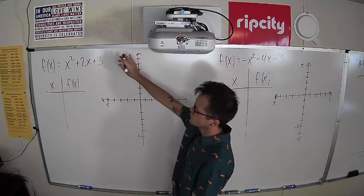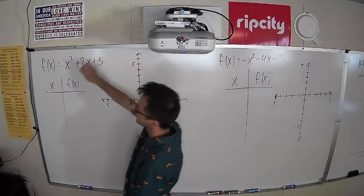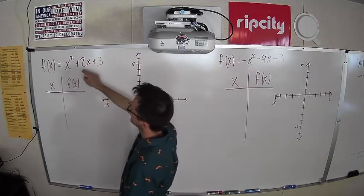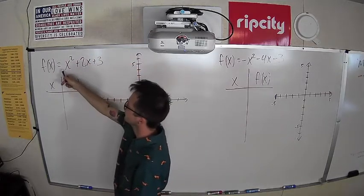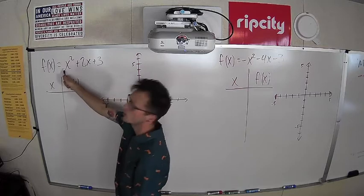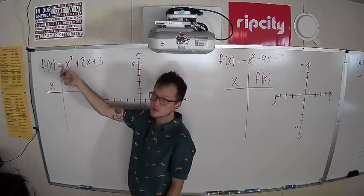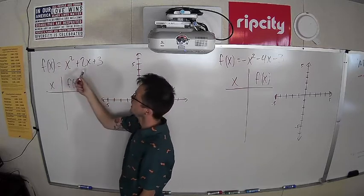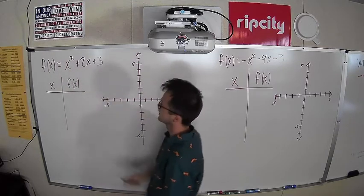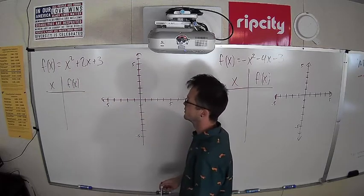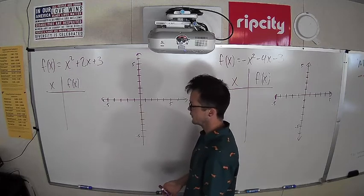Here's our first quadratic we're going to examine: x² + 2x + 3. We have an a value of 1 — there's no coefficient there, so we assume it's 1 — a b value of 2, and a constant of 3, which is our c value.